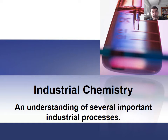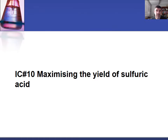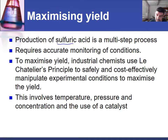Welcome to another video in the series on HSC chemistry and the industrial chemistry option. In this video we're going to focus on ways of maximizing the yield of sulfuric acid. We've previously looked at the processes involved in the production of sulfuric acid and identified that it is a multi-step process.